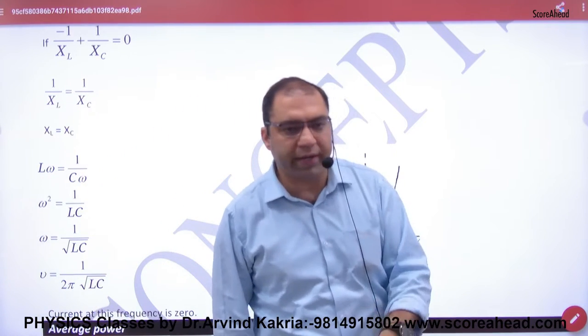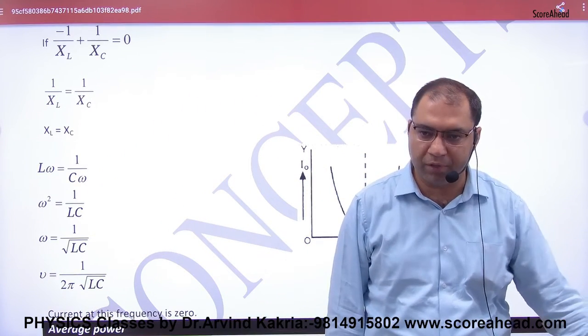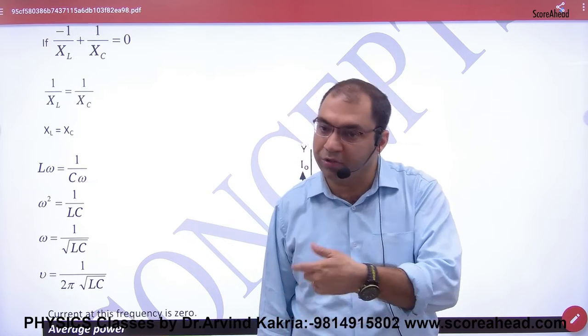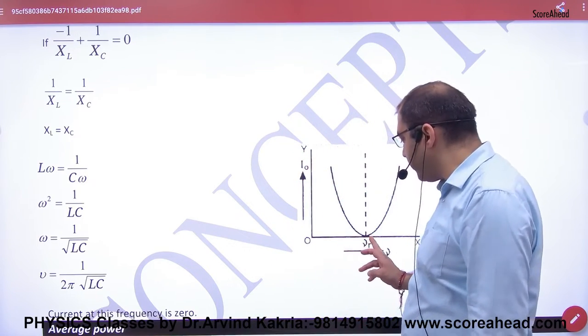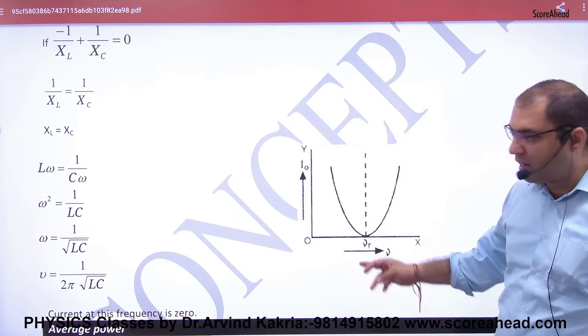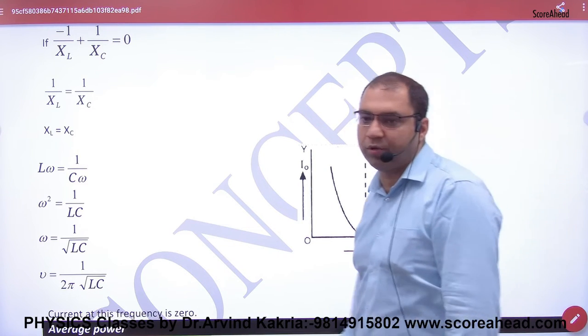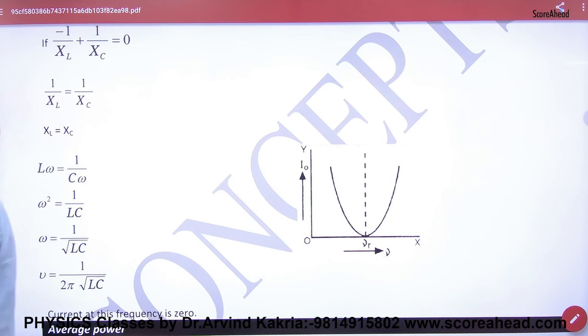If this circuit series LCR and resonance, then the current is maximum. And if this is parallel circuit and resonance, then what will be the current at resonance frequency? Minimum. The graph, the parallel current is minimum and then it will increase. What is the point clear here? In the series it becomes one type of graph and in parallel it becomes another type of graph.